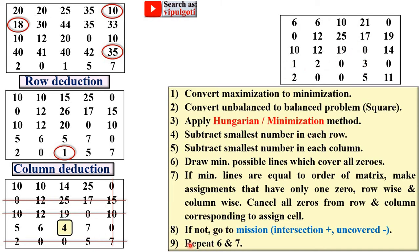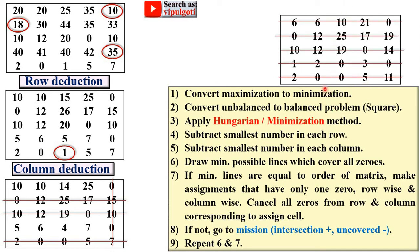Next, repeat the steps and once again draw the minimum possible lines to cover all zeros. After drawing, the number of lines is 5, which is exactly equal to the order of the matrix. Since minimum lines equal the order of the matrix, we can now start the assignment.